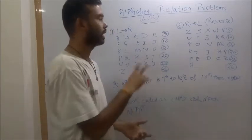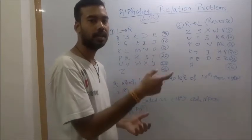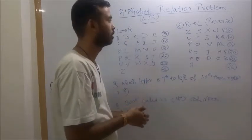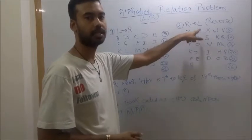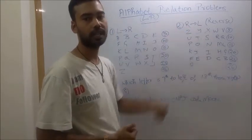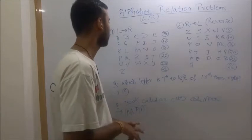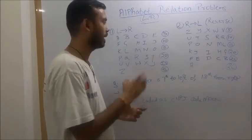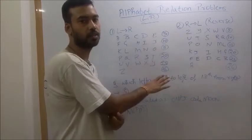So there are two types, first left to right and then right to left. L to R means left to right and R to L means right to left order. R to L is also called as reverse order. Before starting to solve these kinds of problems, we should write alphabets in this pattern.